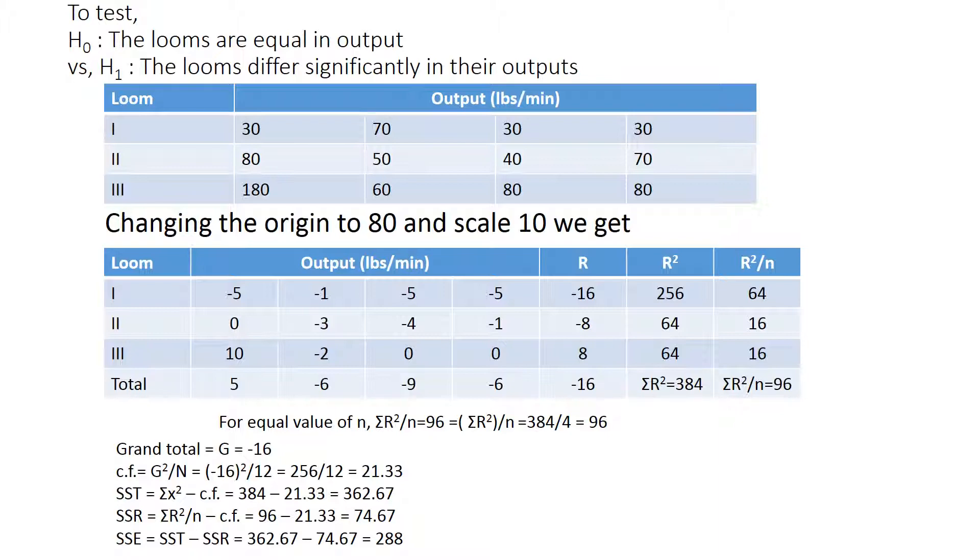SST is summation of x squared minus CF. Summation of x squared is simply the starting number: negative 5 squared is 25, plus negative 4 squared is 16, plus negative 1 squared is 1. Negative 5 squared is 25 again. Zeros are zero, no problem. Plus negative 3 squared is 9, plus negative 4 squared is 16, plus negative 1 squared is 1. Again, 10 squared is 100, plus negative 2 squared is 4, plus 0 squared is 0, 0 squared is 0. All these terms squared and added up gives 384 minus CF, which we already provided, minus 21.33, gives us the value 362.67.